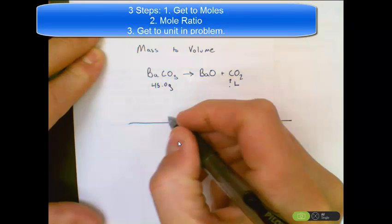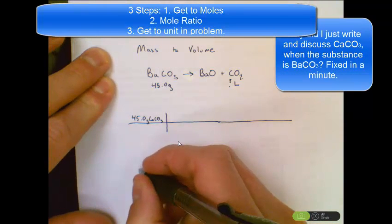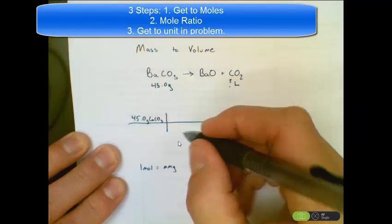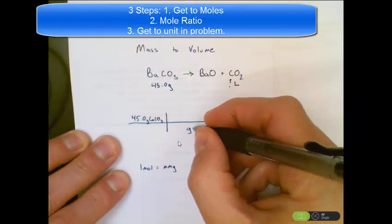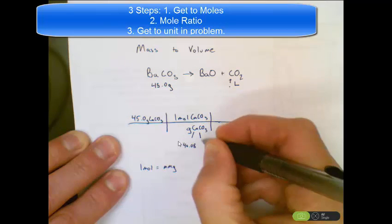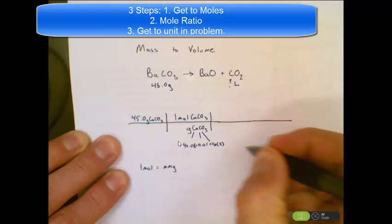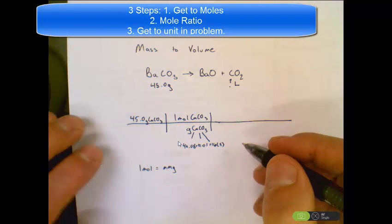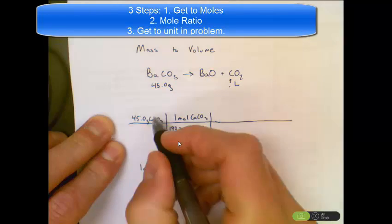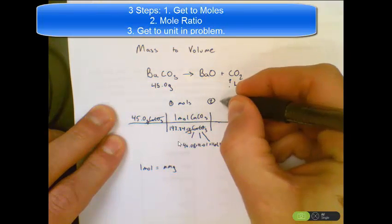Starting with what you know — 45.0 grams of barium carbonate — and going from grams to moles using the molehill. One mole equals the molar mass in grams. Using the periodic table: barium weighs 137.33, carbon weighs 12.01, and oxygen weighs 16 with three copies, giving a molar mass of 197.34 for barium carbonate. That takes care of step one: get to moles. Step two — stack your moles, mole ratio.